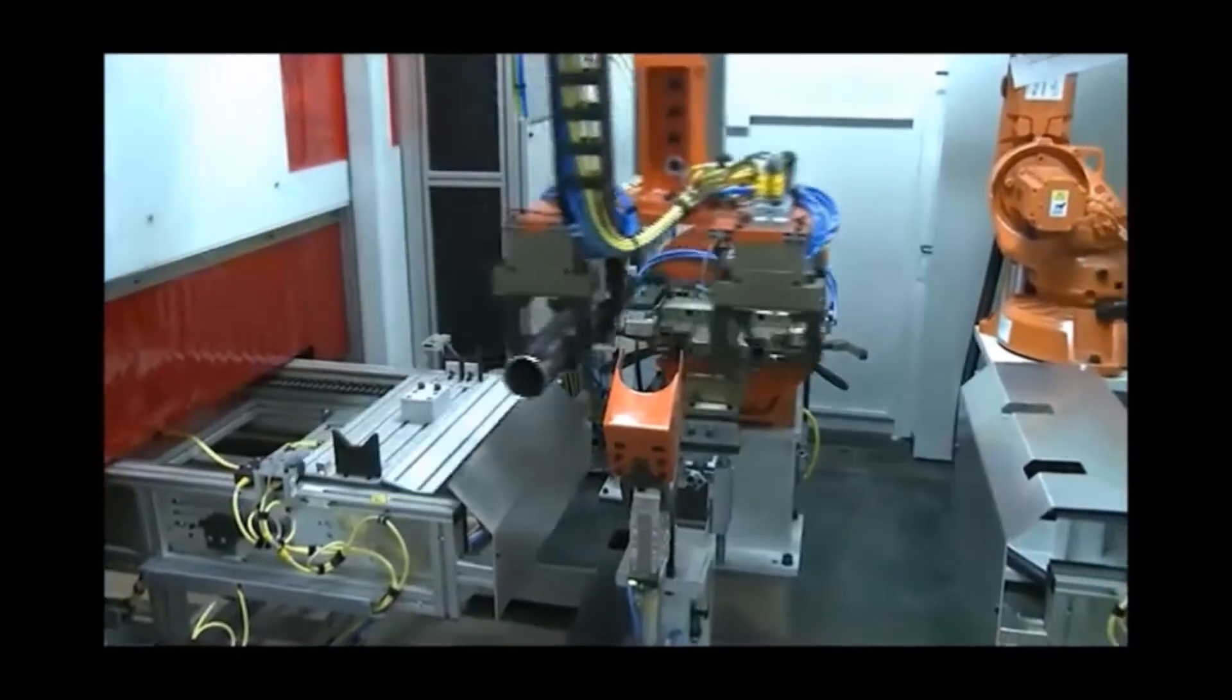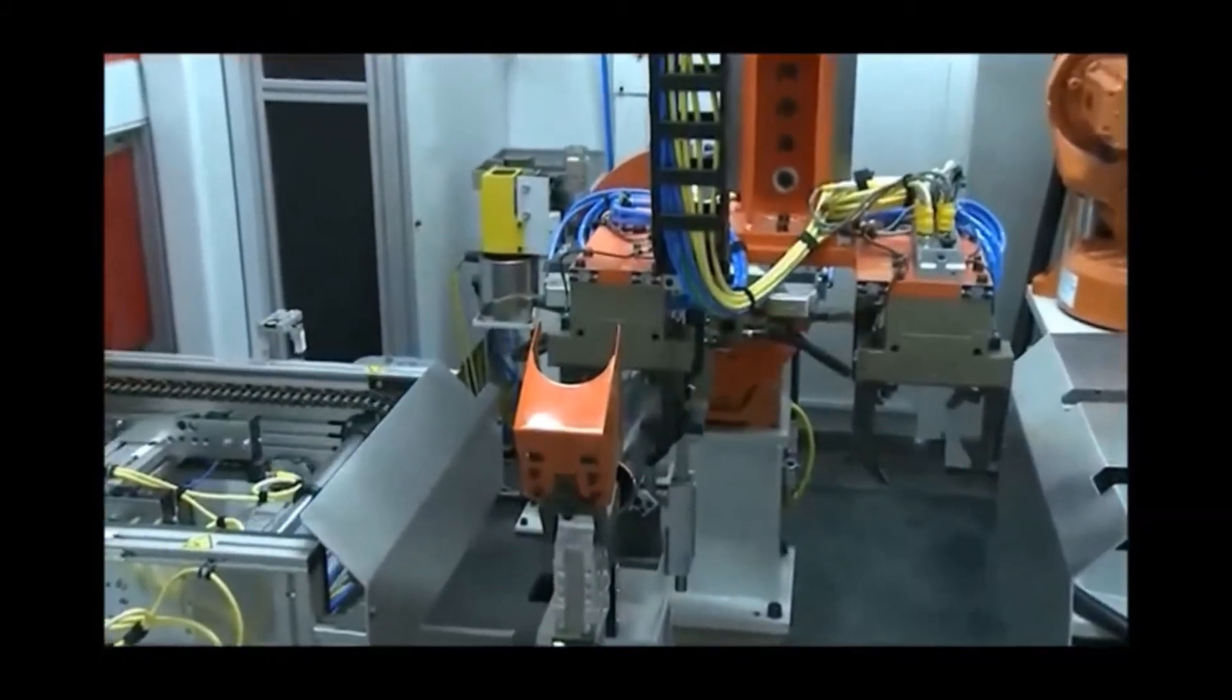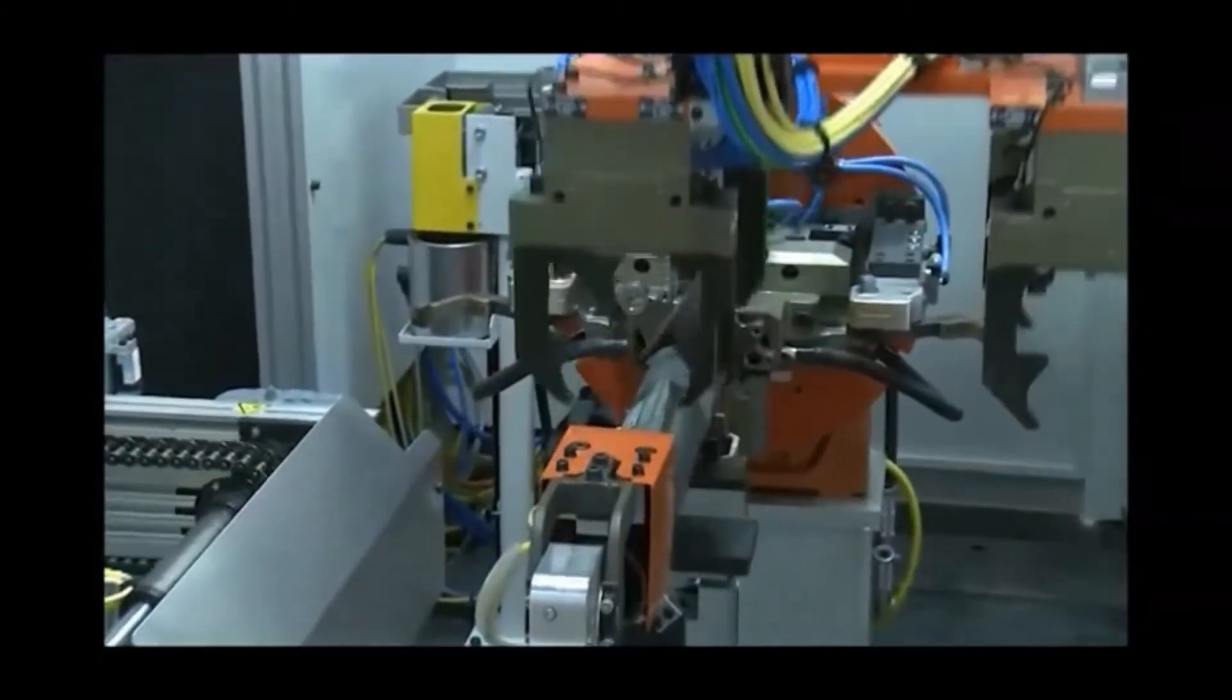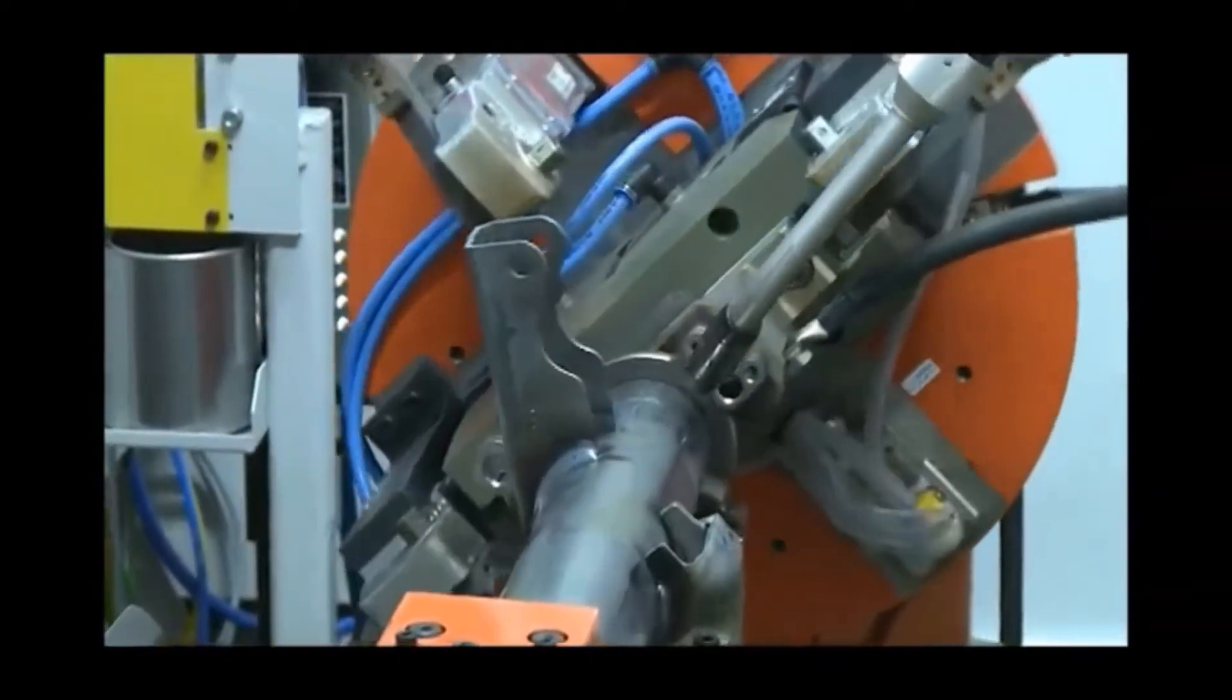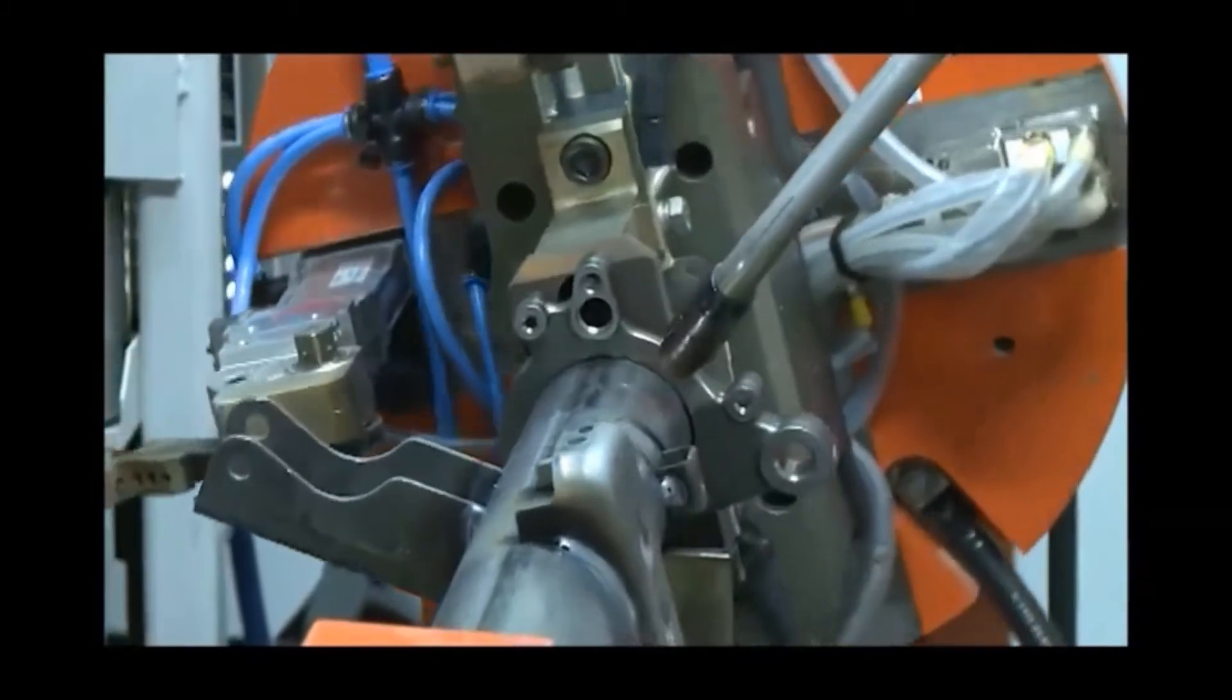Then a pick and place loads the axle tube into the flange weld station. The brake flange is welded to the axle tube with a continuous 360 degree weld.